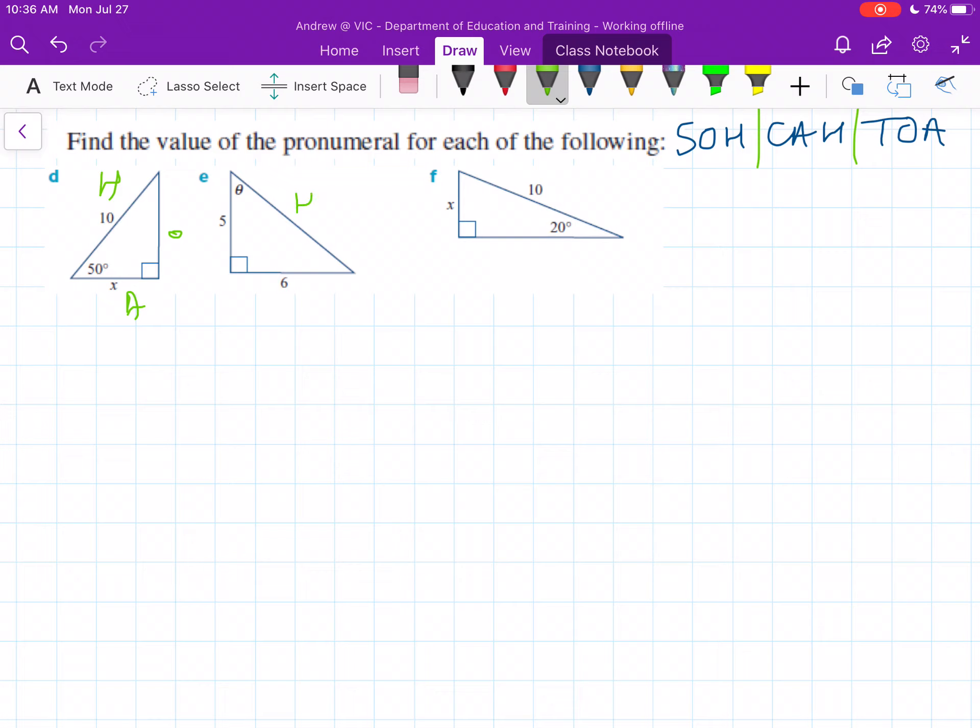Now we just need to break down which trigonometric equation to use and then solve for our unknown. We'll go through our first one. Here we've got an angle of 50 degrees, and we're given the value of the hypotenuse, and we need to work out the adjacent side.